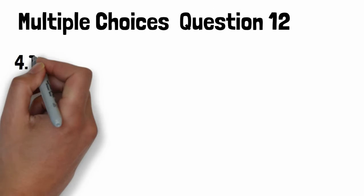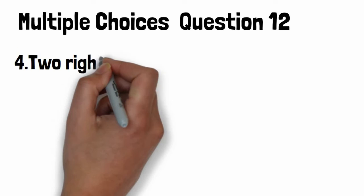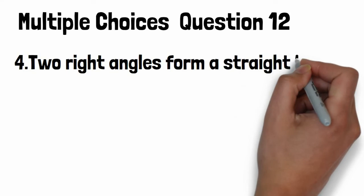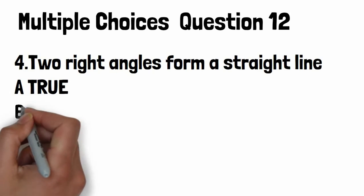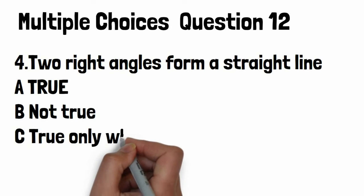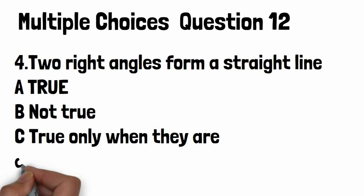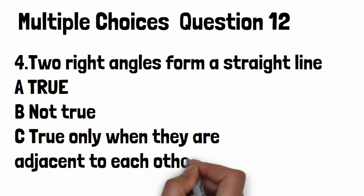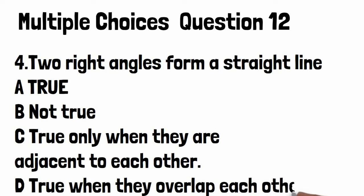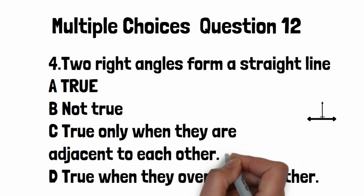Question number 4. Two right angles form a straight line. Option A: True, Option B: Not true, Option C: True only when they are adjacent, Option D: True when they overlap. Option C is the right answer. Two adjacent right angles form a straight line.